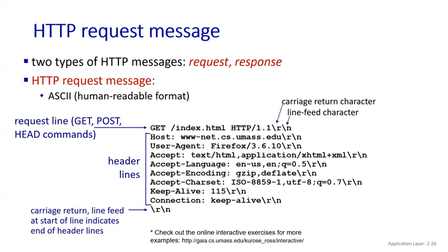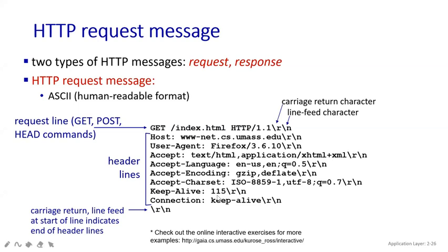Next, the 'accept' field specifies what kind of files it can accept using the GET command — text files, HTML files, applications, XHTML files, or XML files. The accept-language specifies only US English. Accept-encoding specifies what kind of encoding — for example, a zip folder. The character set is also defined. Keep-alive is set for 115 milliseconds, and the connection field specifies keep-alive; once done, the TCP connection will close.